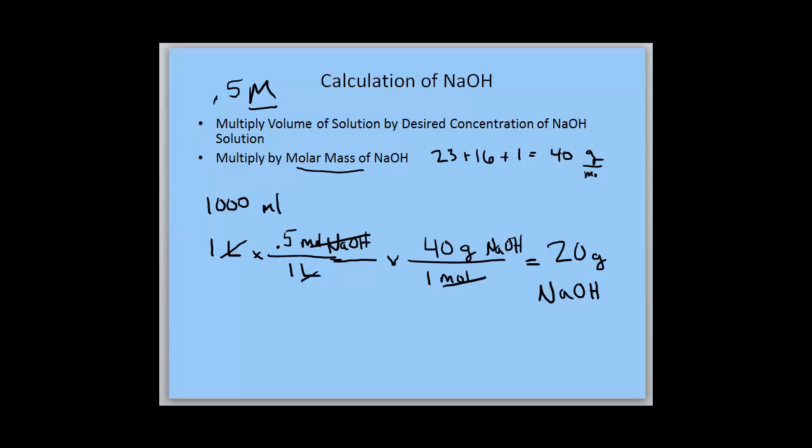Whatever volume and concentration you use for your solution, simply take the volume multiplied by the desired concentration multiplied by the molar mass, and that will give you the mass of the solid for your solution.